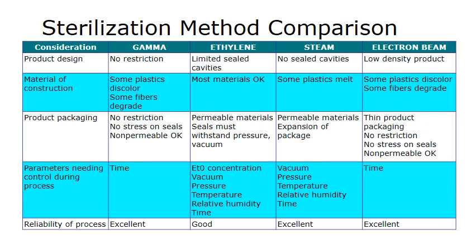Let's have a look at this table which compares all the different methods. With gamma, as I said, there's no restriction on the types of products or product designs of the packaging that can be sterilized. With ethylene oxide, the products have to have sealed cavities, so it's limited in product design. Steam has no restriction.